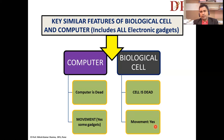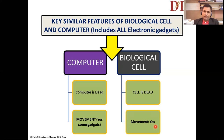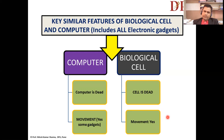Another similarity: a computer can sometimes be dead, and a biological cell is also dead due to various environmental factors or even in a programmed manner. Additionally, some AI-enabled technologies are now able to achieve movement or motion in their systems, while biological cells are naturally blessed with the power of movement or motion.